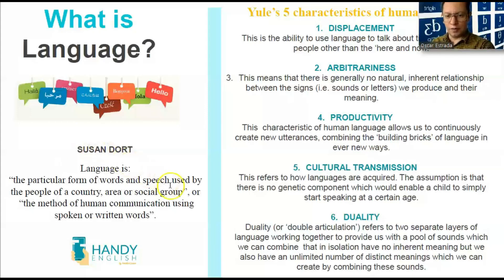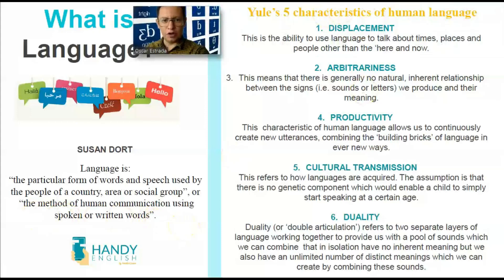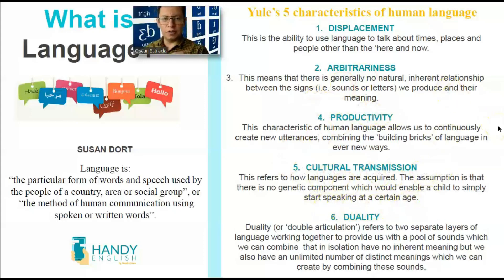Another definition also provided by Susan Dort is that language is the method of human communication using spoken or written words. Then we have a theorist named George Yule. George Yule states that there are five different characteristics in the human language: displacement, arbitrariness, productivity, cultural transmission, and duality. These five characteristics of human language belong to all languages — not only to the English language, but to all languages.